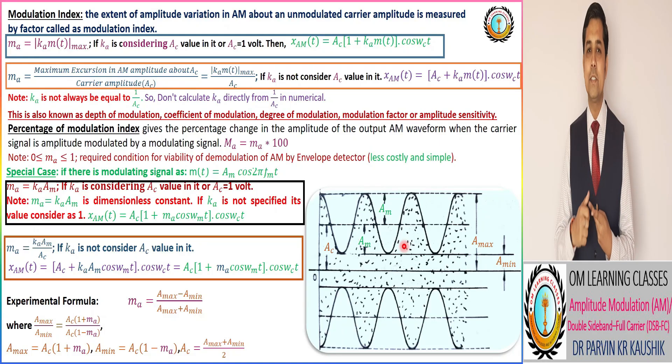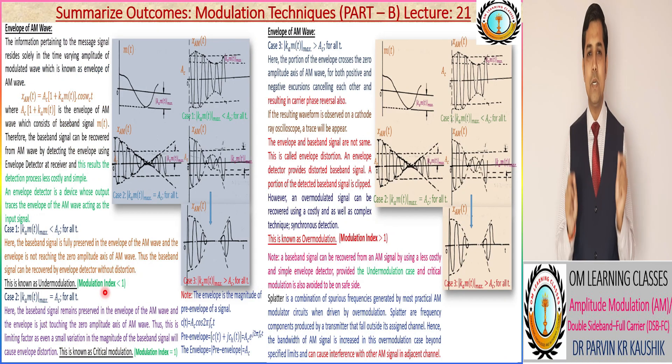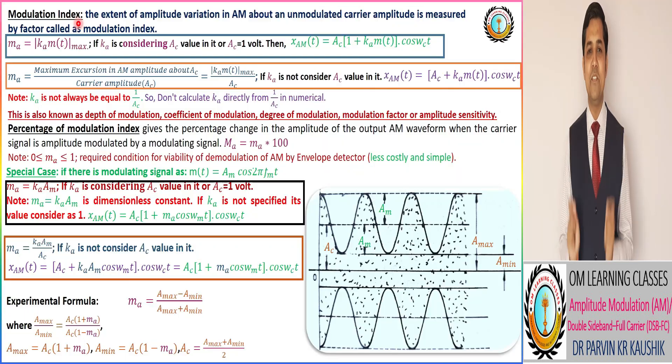As per analog AM, we have three cases: the first is under modulation, the second is critical modulation, and the third is over modulation. As per these terms, the modulation index is defined.